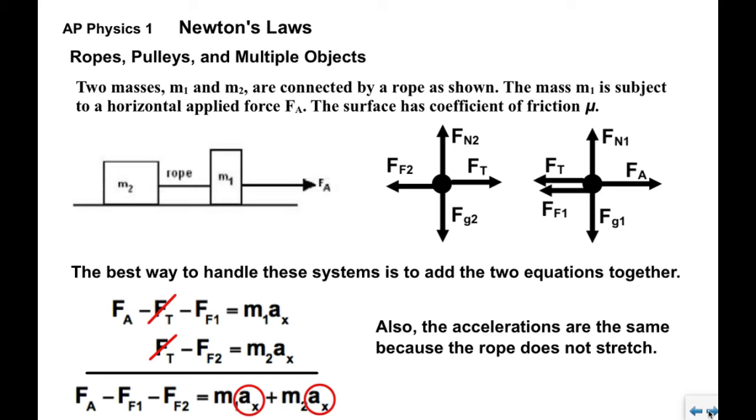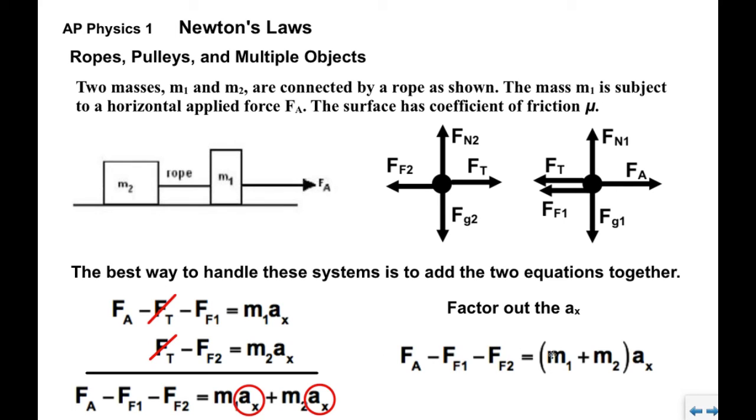We also want to note that because the rope doesn't stretch at all, whatever acceleration M1 has, M2 will also have. So they will both accelerate at the same rate. These A sub x values are the same, so we can factor it out.